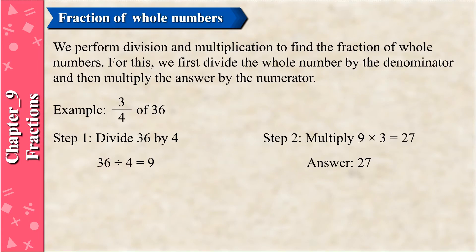Fraction of Whole Numbers: We perform division and multiplication to find a fraction of whole numbers. First, divide the whole number by the denominator, then multiply the answer by the numerator. Example: 3/4 of 36. Step 1: Divide 36 by 4 = 9. Step 2: Multiply 9 by 3 = 27. Answer: 27.